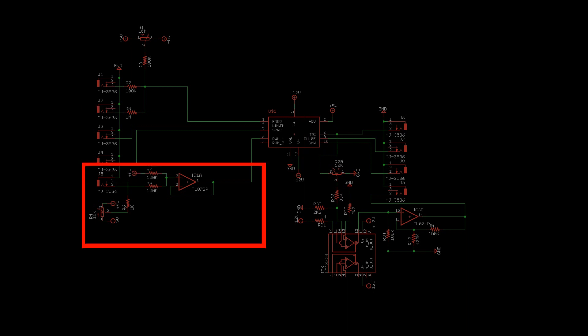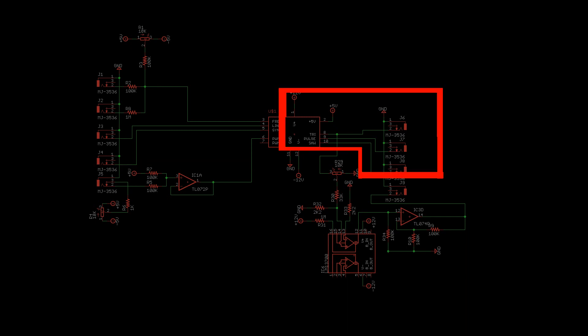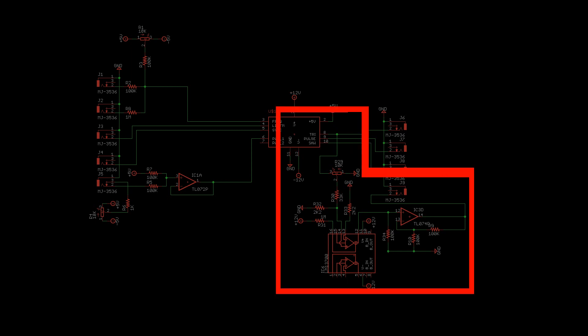PWM pulse width is shifted from a plus minus 5V signal range to a 0-5V range. Triangle, saw, and PWM outputs are connected directly to jacks, with the triangle output also connected to a sine shaper.